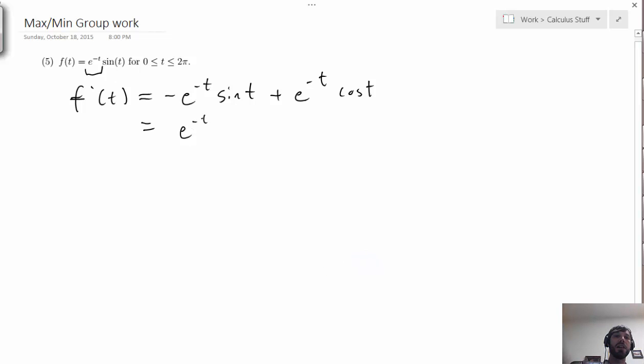The trick to finding the critical numbers is to factor out e to the negative t and be left with negative sine t plus cos t. When we set this equal to 0, this e to the negative t is never 0, so we just have to focus on the values of t for which this is equal to 0. Those happen to be the values of t for which sine t is cos t, or in other words, for which tan t is equal to 1.